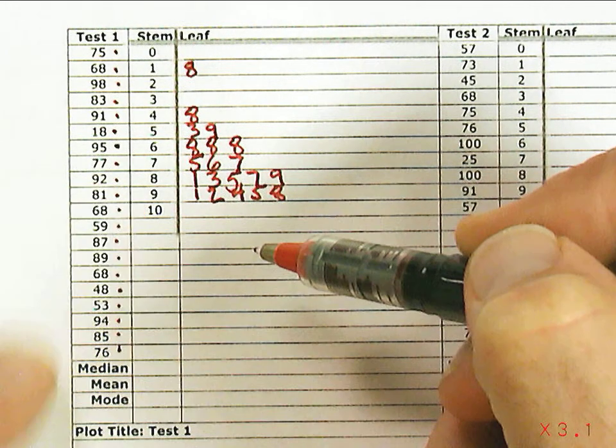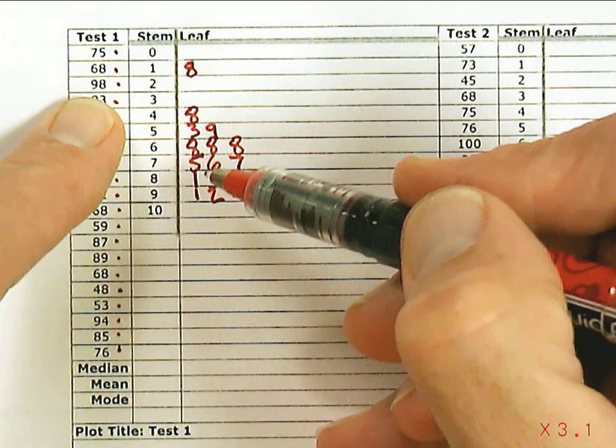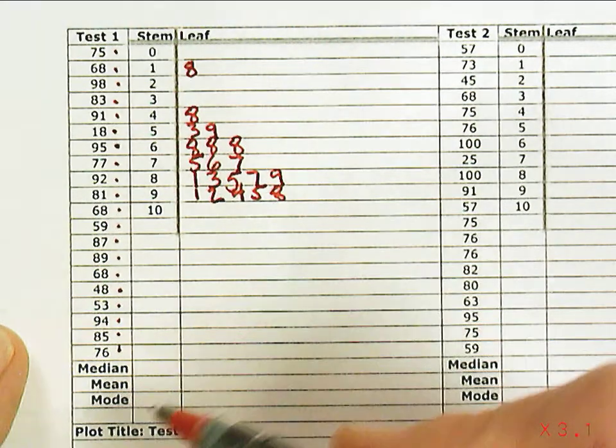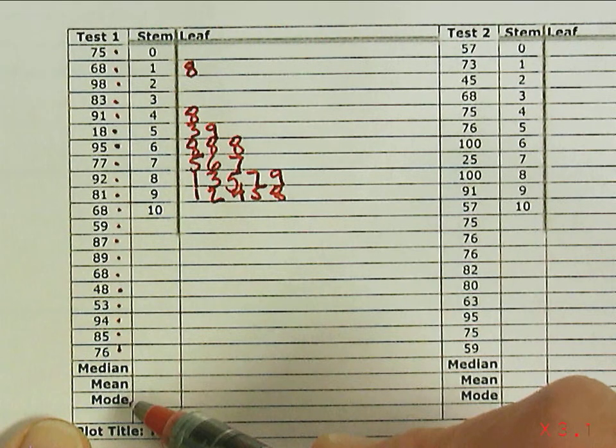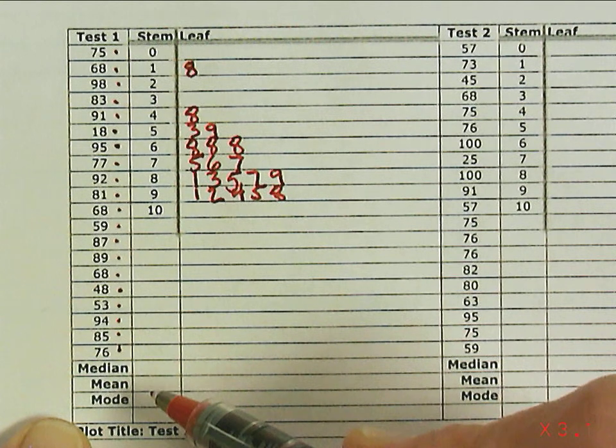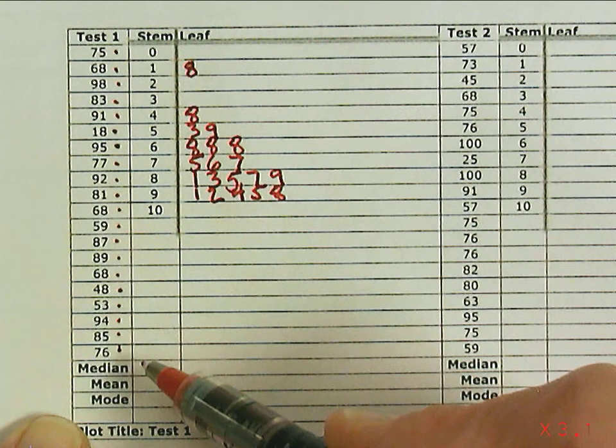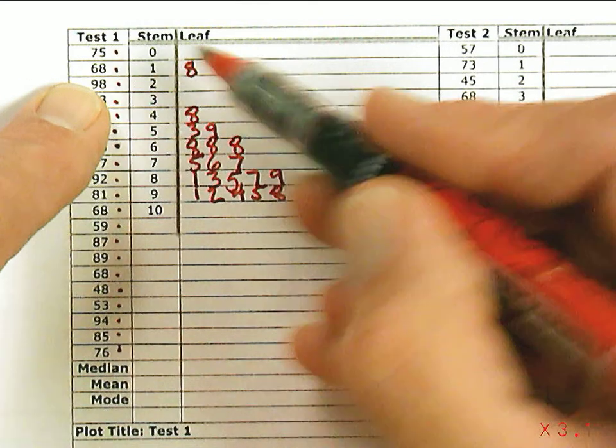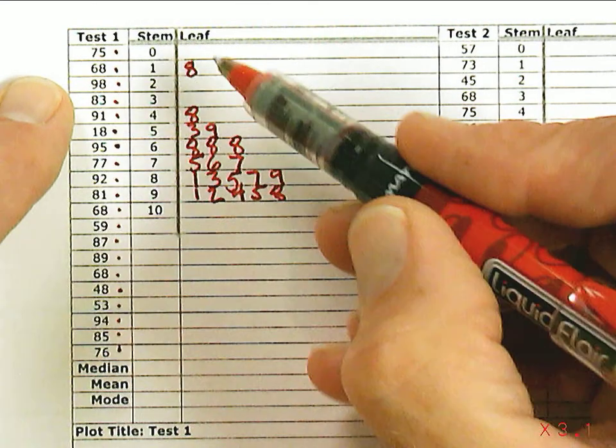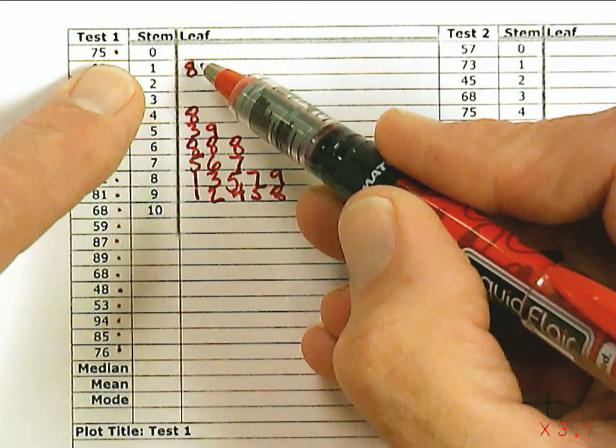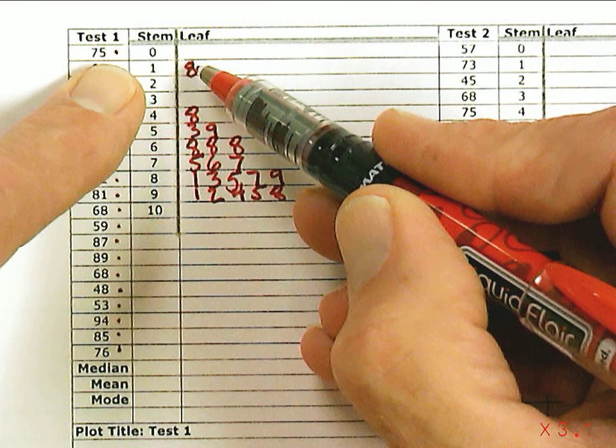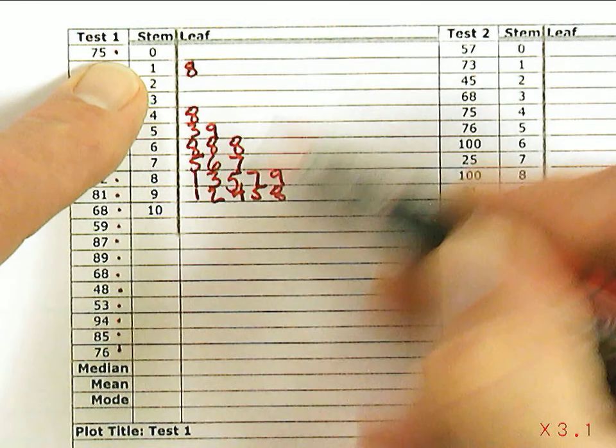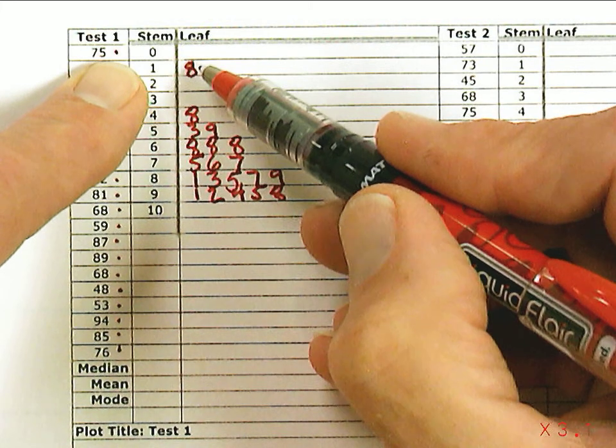This helps because the next thing I want to do is find the median, which is the middle number in the set. Down here it's asking me to find the median, the mean, and the mode. Those are the three measures of center we most often use to describe a set of data. The median is the middle number. I know there's 20 numbers in the set, so to find the middle, I'm going to count 10 off of each end.